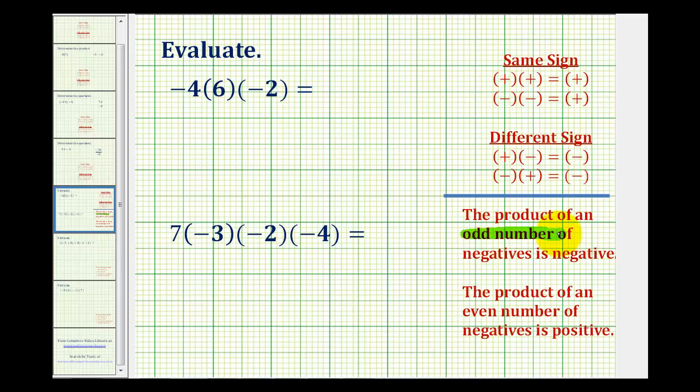The product of an odd number of negatives is always negative, and the product of an even number of negatives is always positive.